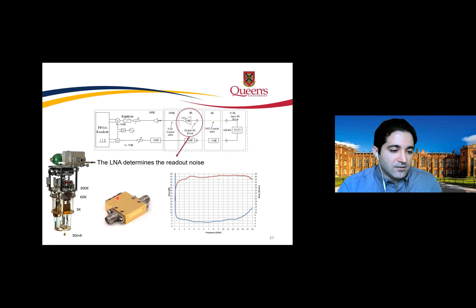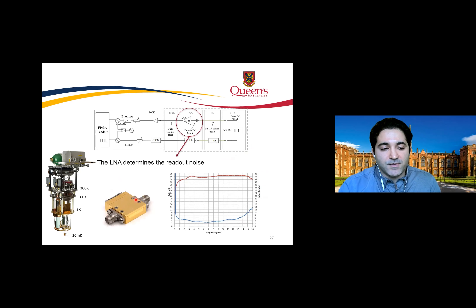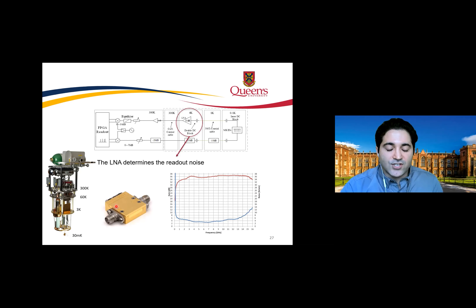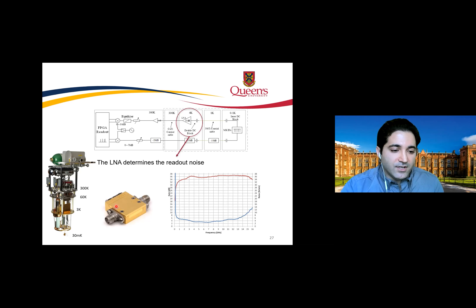The LNA we use is HEMT-based technology. The noise temperature of the amplifier is very important. Our amplifier had a noise temperature of about 5 K, but you can also find 1 K noise temperature amplifiers. Many facilities like JPL and NASA fabricate and design their own custom low noise amplifier systems.